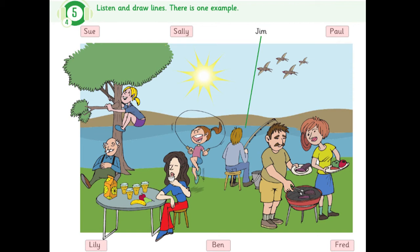Now, you listen and draw lines. 1. Who's the woman in the red trousers? The one who is drinking tea. Yes. She's my aunt. What's her name? That's Lily.